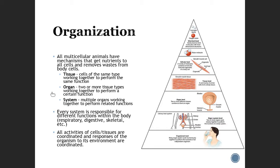The next level up is organs. This is where you have two or more tissue types working together to perform a certain function. For example, here they're showing the bladder — skeletal muscle and smooth muscle come together to form the bladder, which is that one specific organ.